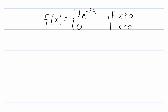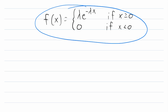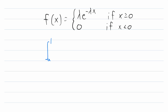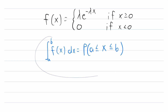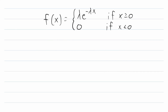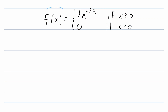A continuous random variable is said to be exponentially distributed if this is its probability density function. Remember that the PDF of a continuous random variable is the function that, when integrated from a to b, gives the probability of that random variable being between a and b. In this function, x is our independent variable and lambda is what's called the parameter, or the rate parameter — a constant.